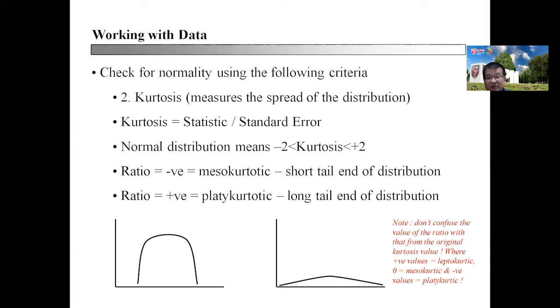The issue will be when you have values that are in between. For example, kurtosis meets the definition of normal distribution, whereas the skewness doesn't. Then what would be your decision? I would recommend that we go back to the normality plots, look at the results of the Kolmogorov-Smirnov or the Shapiro-Wilk to determine whether your data is normally distributed or otherwise.